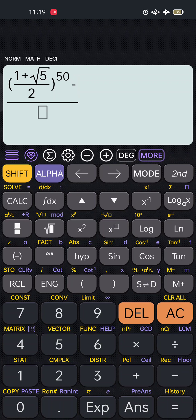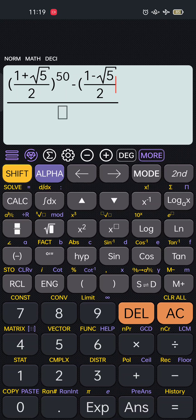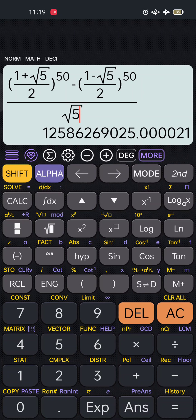Minus the second term, press the open parenthesis and the fraction button. 1 minus the square root of 5 over 2 raised to 50 and bring the cursor at the main denominator, then input the square root of 5.